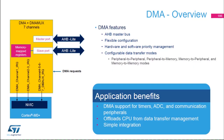The DMA is a master on the AHB bus, so it offers flexible configuration and also provides hardware and software priority management. There are different transfer modes: peripheral-to-peripheral, peripheral-to-memory, memory-to-peripheral, and memory-to-memory.